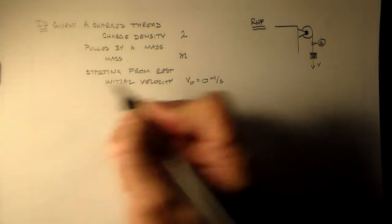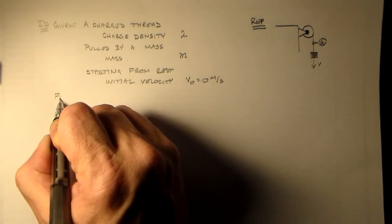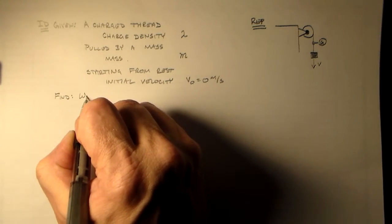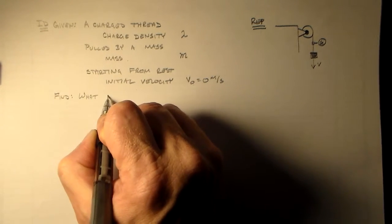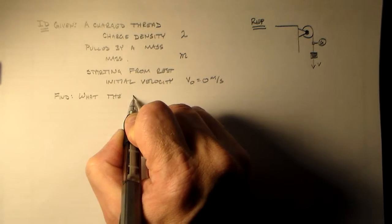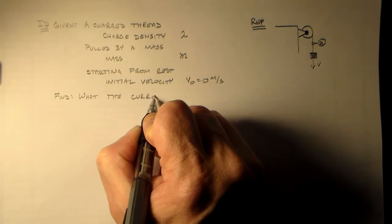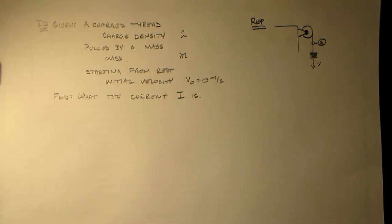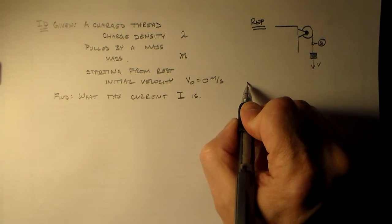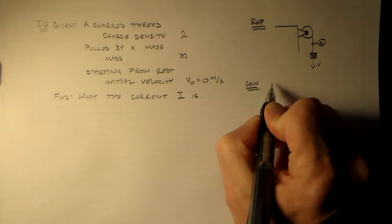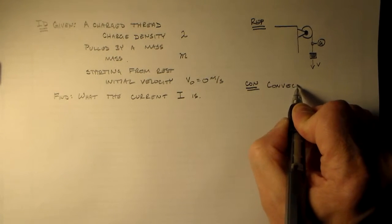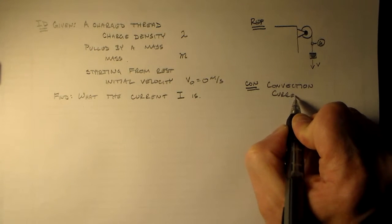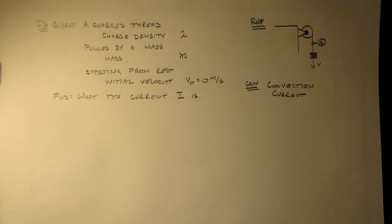All right. So that'll be something that we can look at. And we just want to figure out what the current is. Okay. So we're going to find I. And our concept here is a convection current, like I've been speaking about.